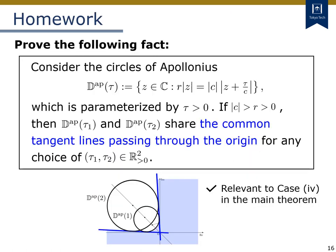Finally, I give you the homework in this lecture. What to do is to show that the Apollonius circles parameterized by τ have common tangent lines passing through the origin, as illustrated here with the blue lines. This fact is relevant to case 4 in the main theorem.